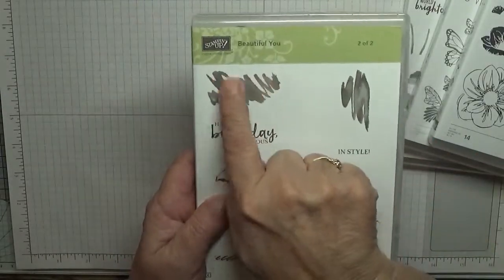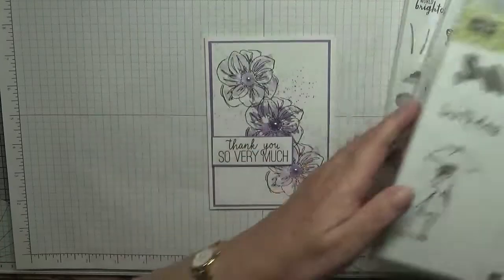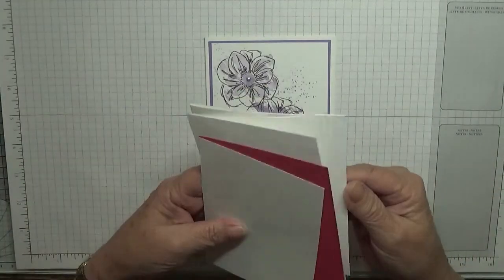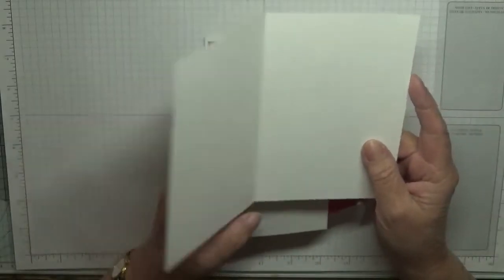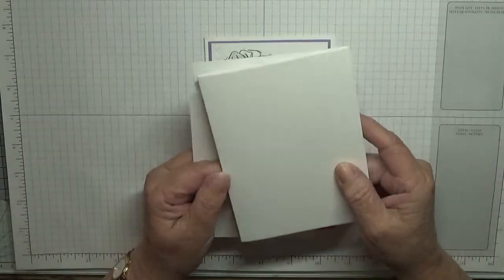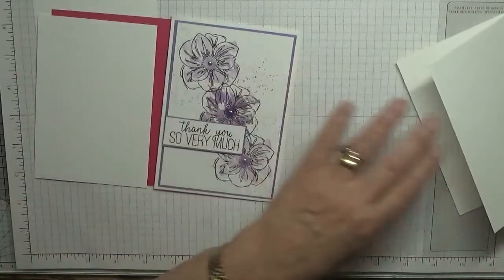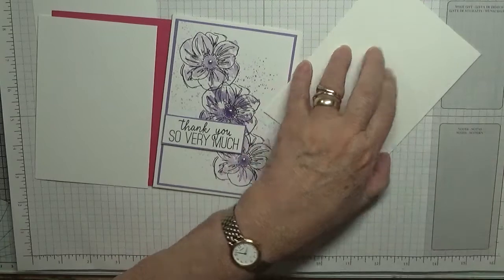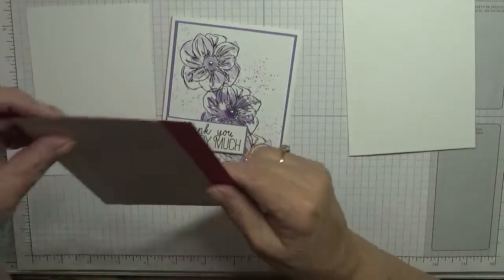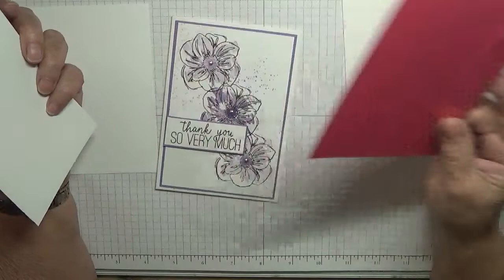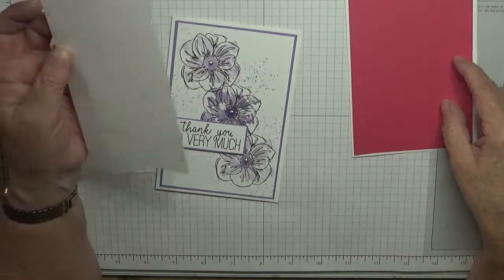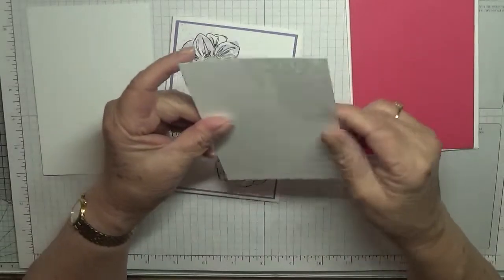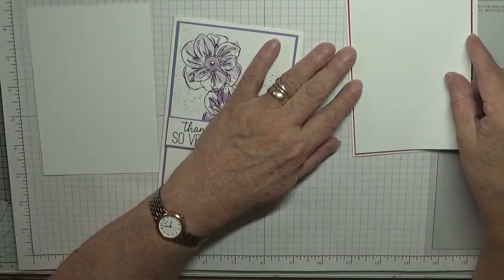Beautiful you for that image. I'm using a white card blank as usual of eight and a quarter by five and seven eighths, scored at one eighth, folded in half and finished. I've got a piece of melon Mambo at five and five eighths by three and seven eighths and a piece of white cardstock at five and a half by three and three quarters.